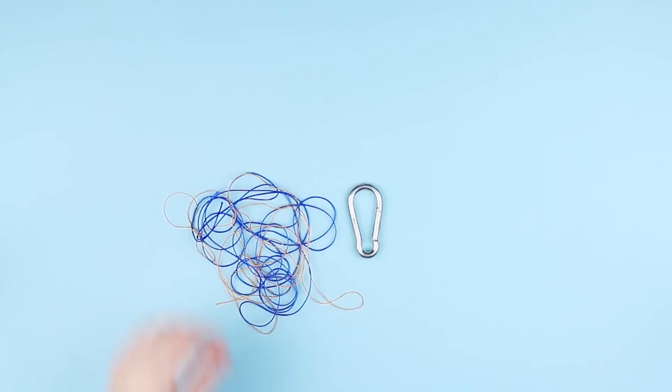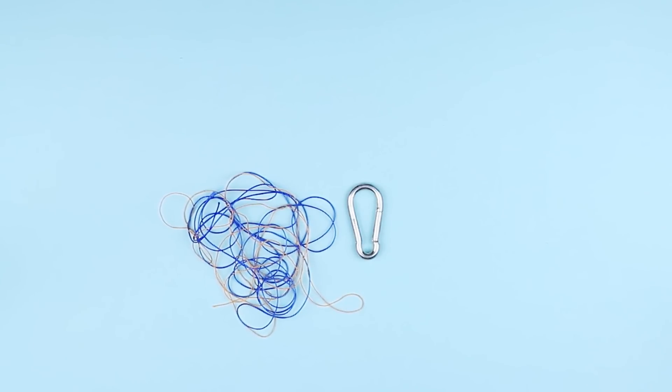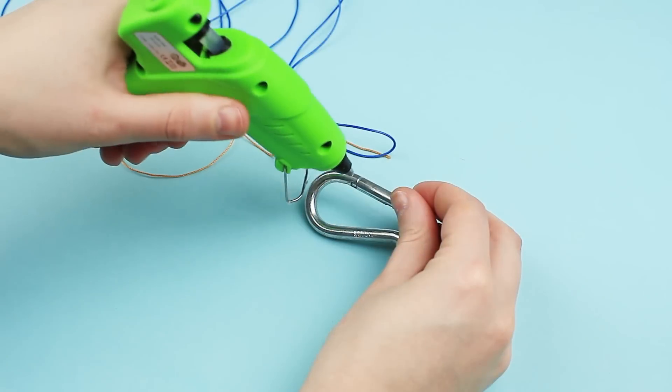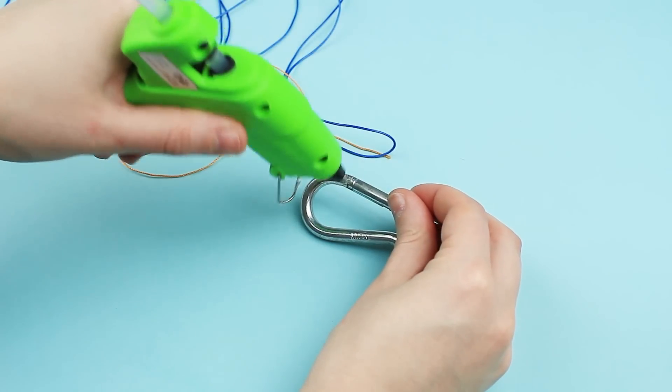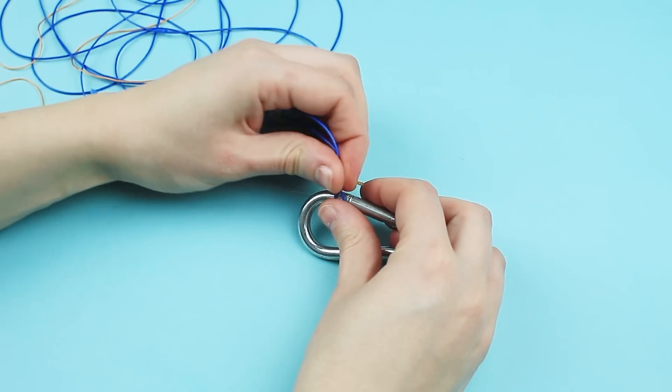To make the first accessory, let's take two silk threads of blue and beige colors. Hot glue the end of the blue thread to the carabiner. Attach the beige thread next.